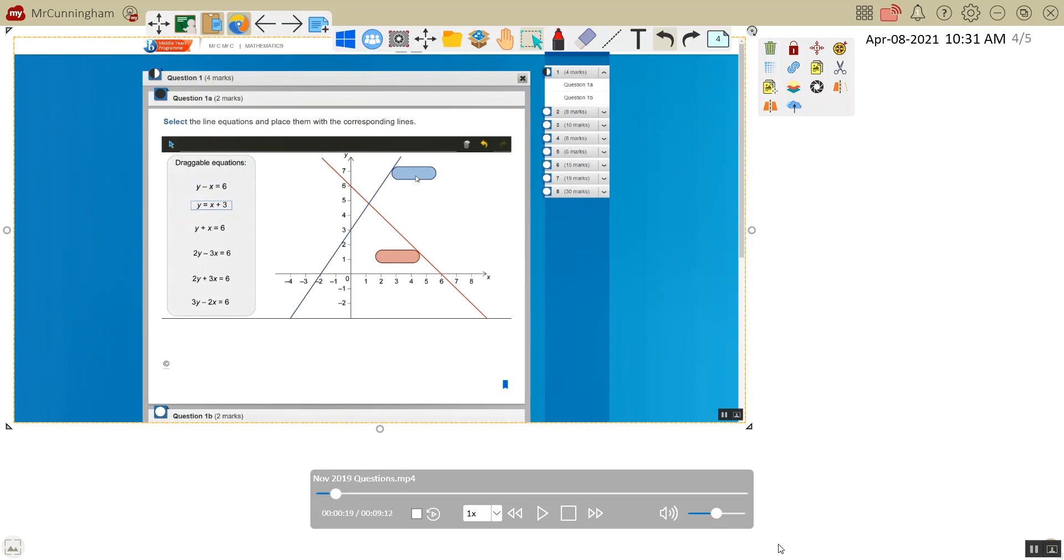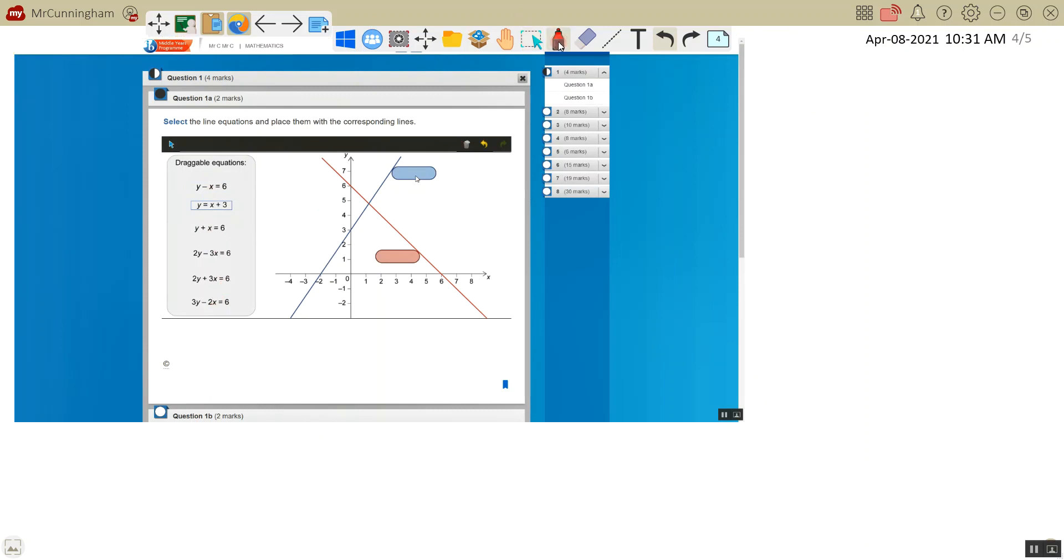The easiest way to go about this question is rather than dealing with these equations, deal with the actual lines themselves. Let's look at the red line first and work out what its equation is. Hopefully it will match up. The equation of any line is y equals mx plus c, where m is the gradient. Let's figure out what the gradient of this line is.